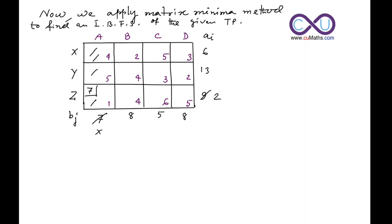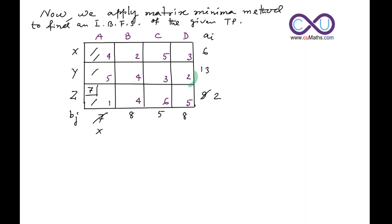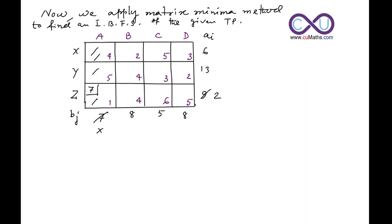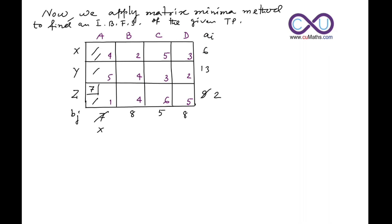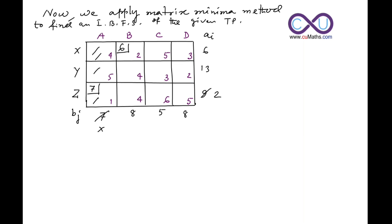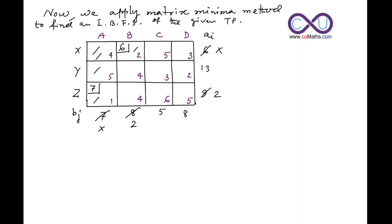Now the minimum element among the remaining cost cells — 2, 5, 3, 4, 3, 2, 4, 6, 5 — is 2, and it occurs in two places, so we select one arbitrarily. Here the demand is 8 and the supply is 6, so we insert 6 as the allocation and cross out that row. This column is now blocked for further insertion.